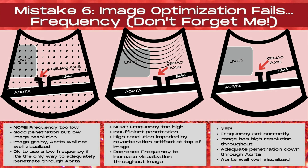You should always use the highest frequency possible to provide the highest detail resolution, though it's okay to use a low frequency if it's the only way to adequately penetrate through the aorta. In the middle image, the frequency is too high — there's insufficient penetration and reverberation artifact appears. If you see reverberation artifact below the anterior abdominal wall muscles and fat, your frequency is too high and needs to be decreased. The image to the right is what you're striving for: frequency set correctly, high resolution throughout, adequate penetration, and the aorta wall well visualized.